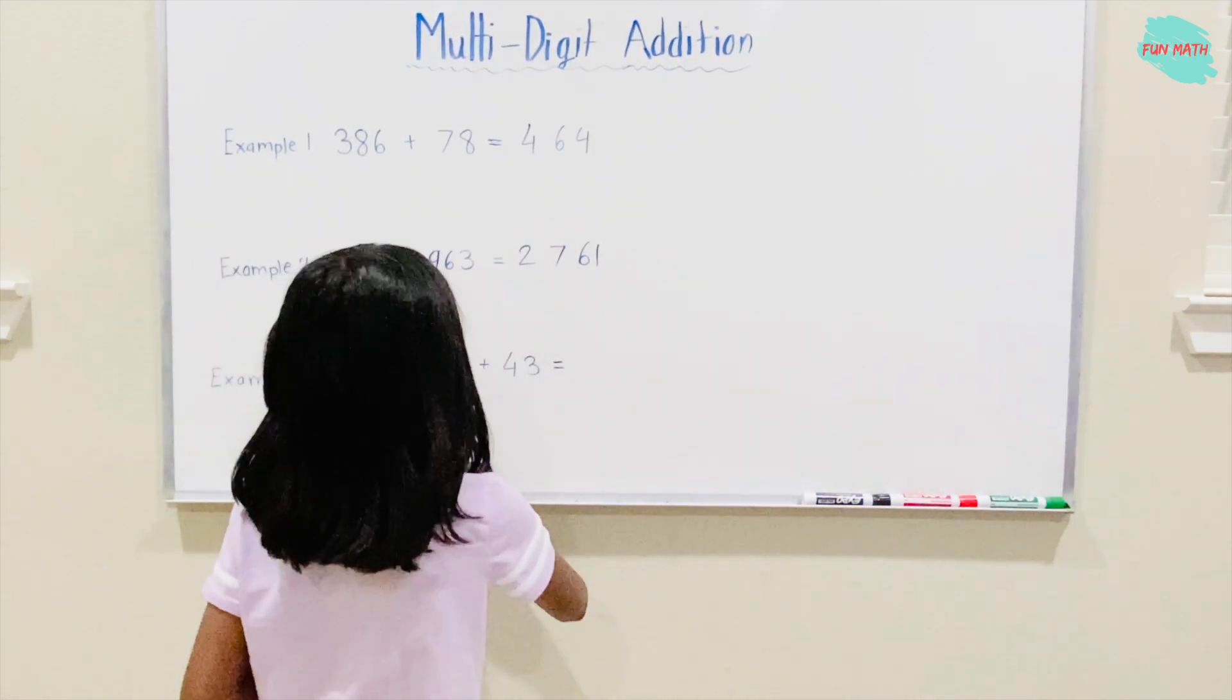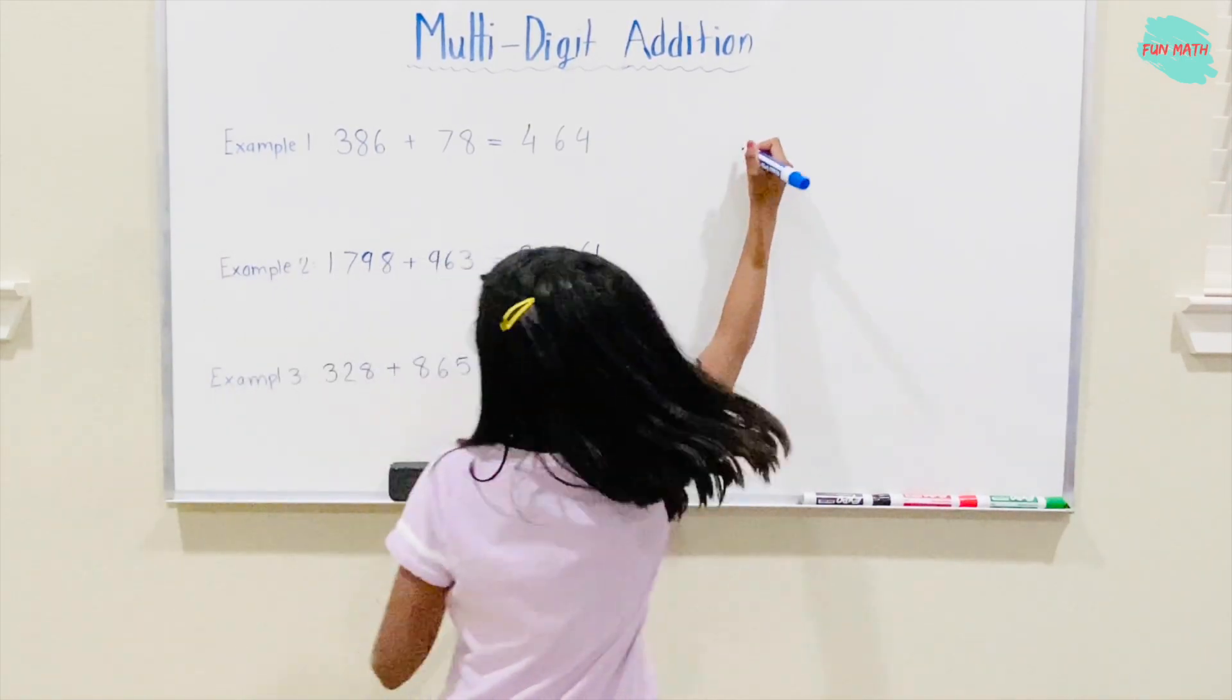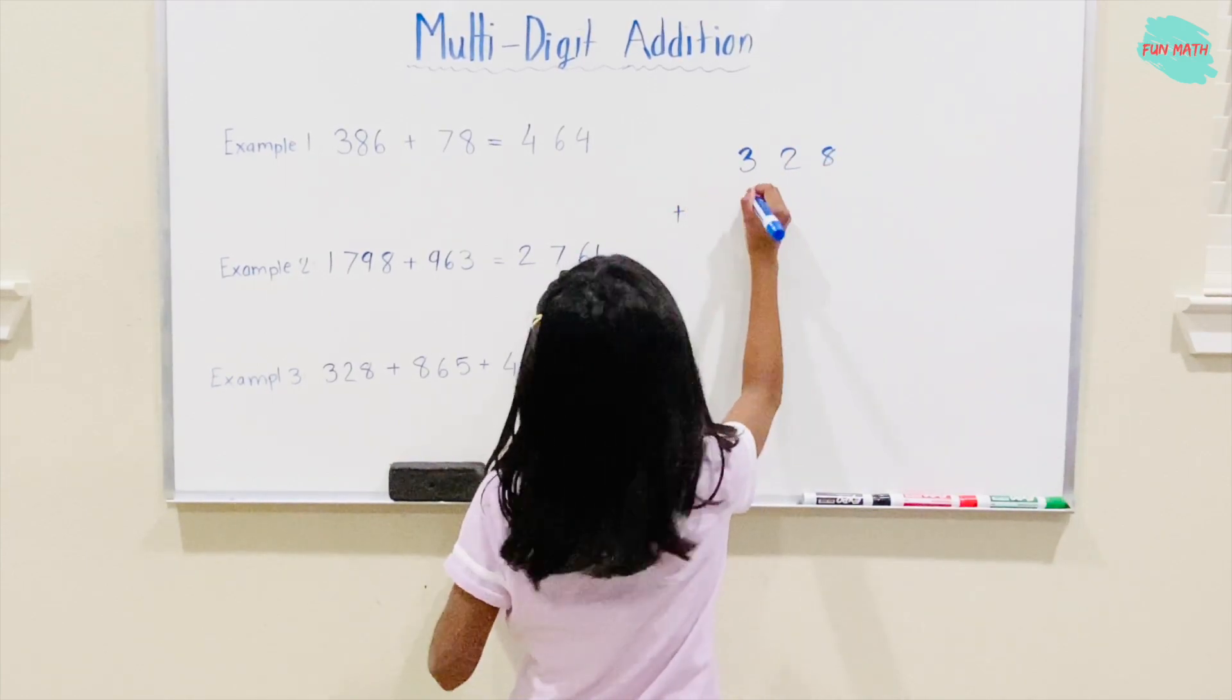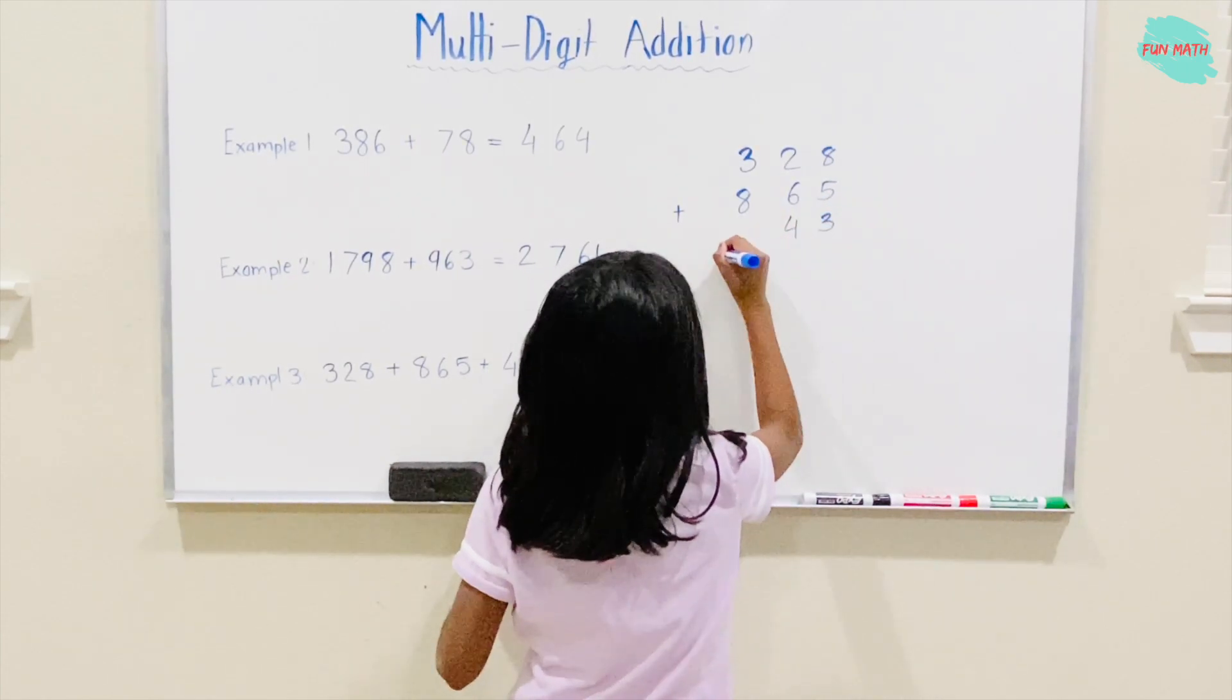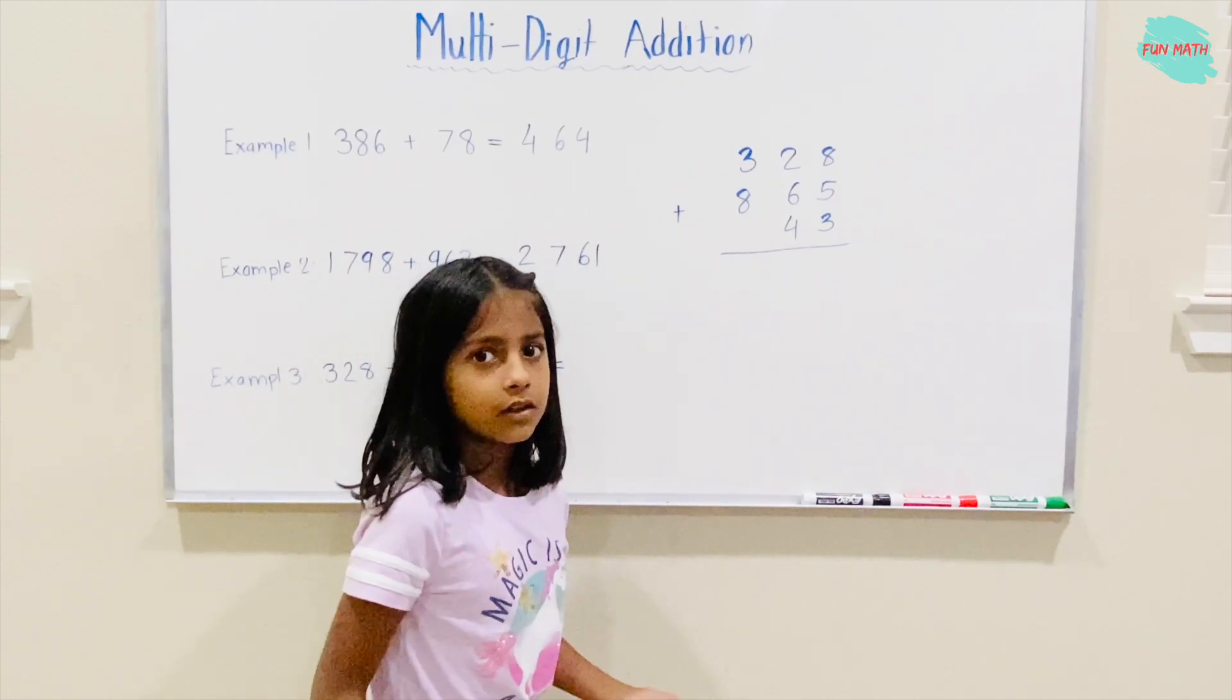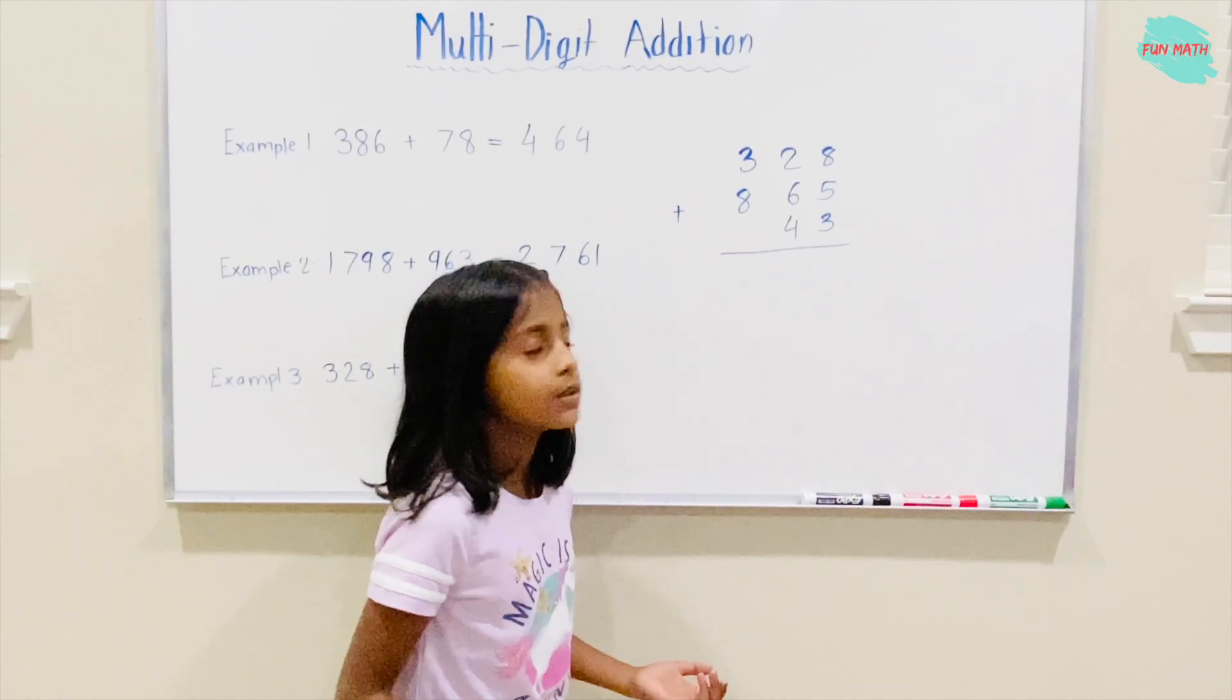Okay. Let's solve Example 3. 328 plus 865 plus 43. Here, you just add them. Nothing's wrong, just because there are three numbers.